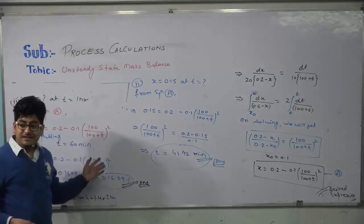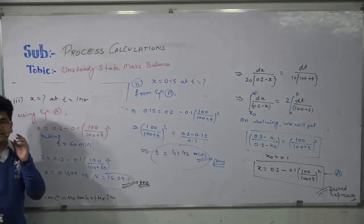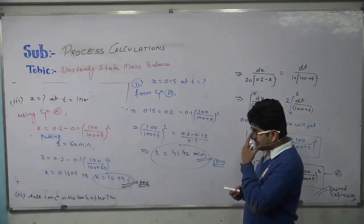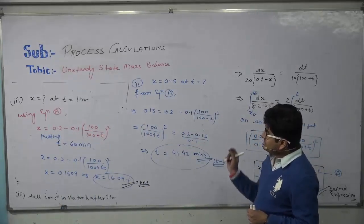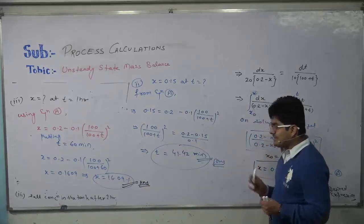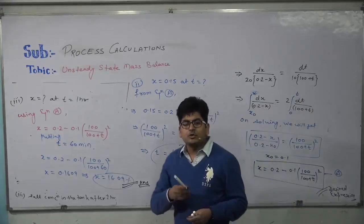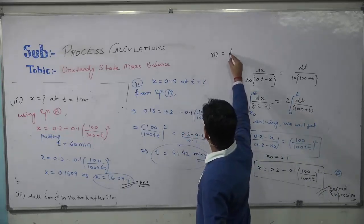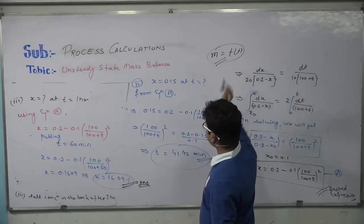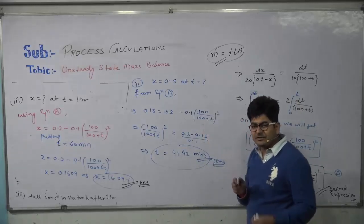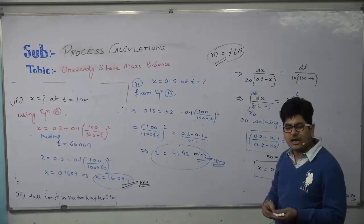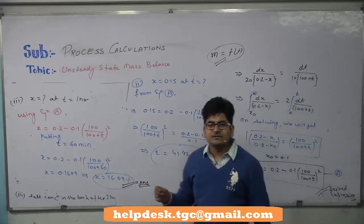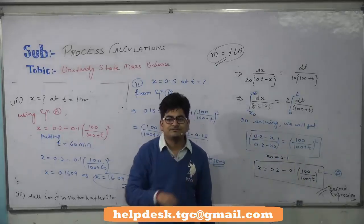Solving an unsteady state material balance problem is quite simple — not as difficult as it looks. You just need to read the expression carefully and perform the material balance. The important point is to find the equation of mass as a function of time and then apply the material balance equation. Hope you understood the concept; if you have any queries, mail us. Thank you.